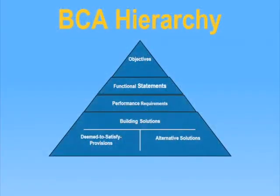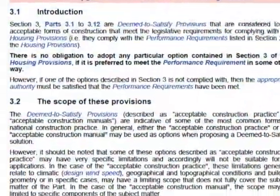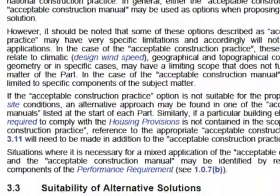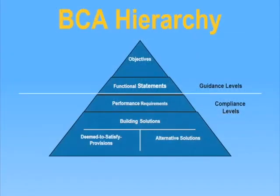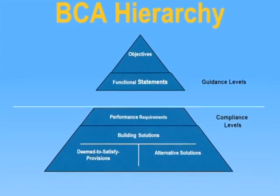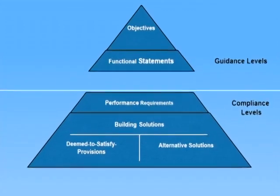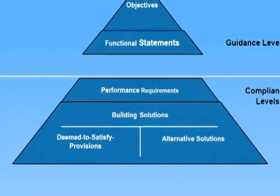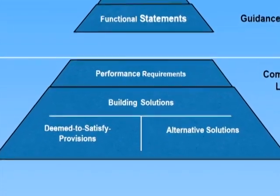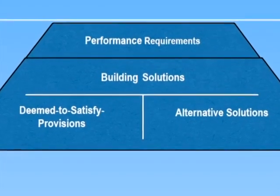Alternative solutions are basically finding a solution that might be as good as or better than the deemed to satisfy solution. The key to the performance-based BCA is that there is no obligation to adopt any particular material, component, design factor, or construction method. An approval authority may still issue an approval if it differs in whole or in part to the deemed to satisfy provisions, if it can be demonstrated that the design complies with the relevant performance requirements. A building solution can also be a combination of both deemed to satisfy and alternative solutions.